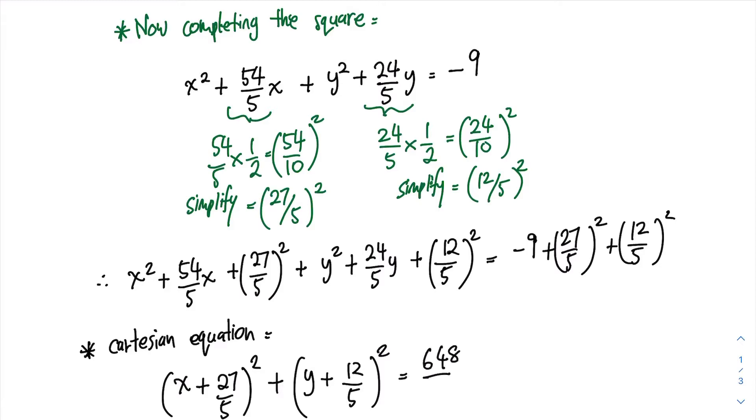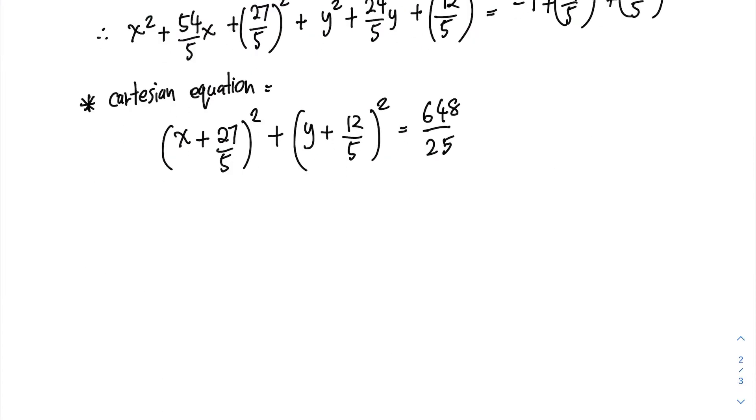Finally, we find the equation for a circle with the center at x equal to negative 27 over 5 and y equal to negative 12 over 5, with the radius r equal to 648 over 25.